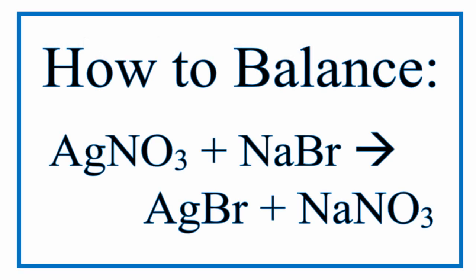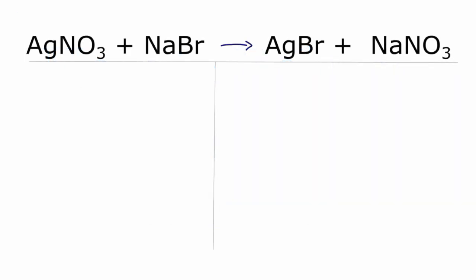To balance this equation, AgNO3 plus NaBr yields AgBr plus NaNO3. Let's start by counting the atoms on each side of the equation.